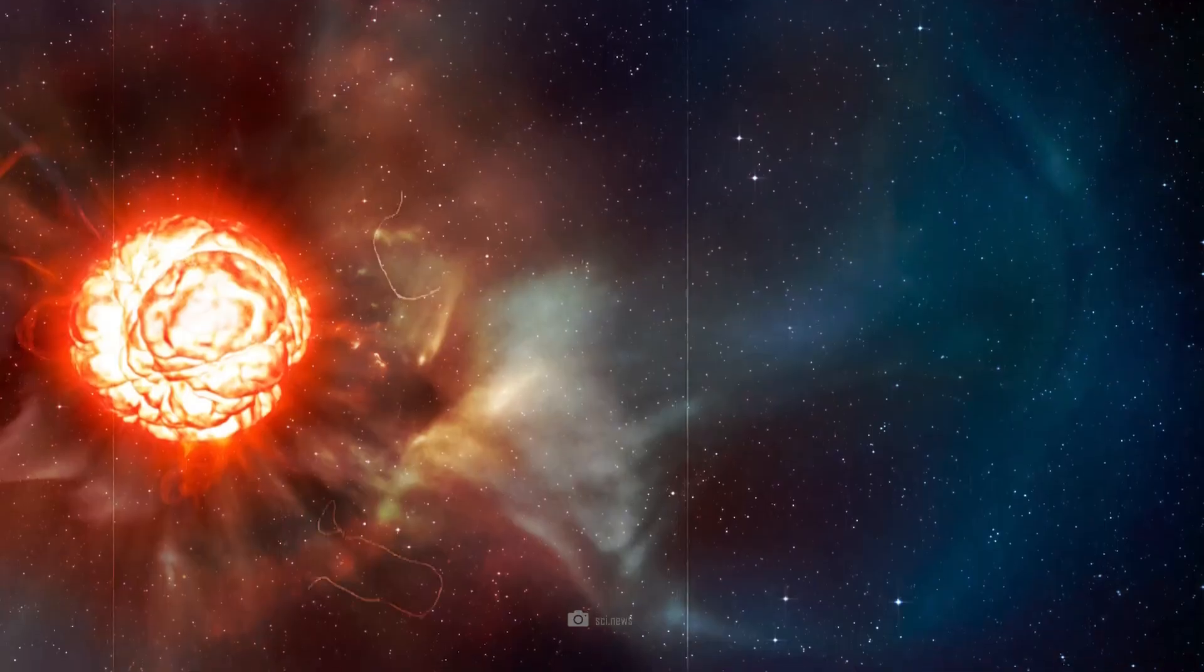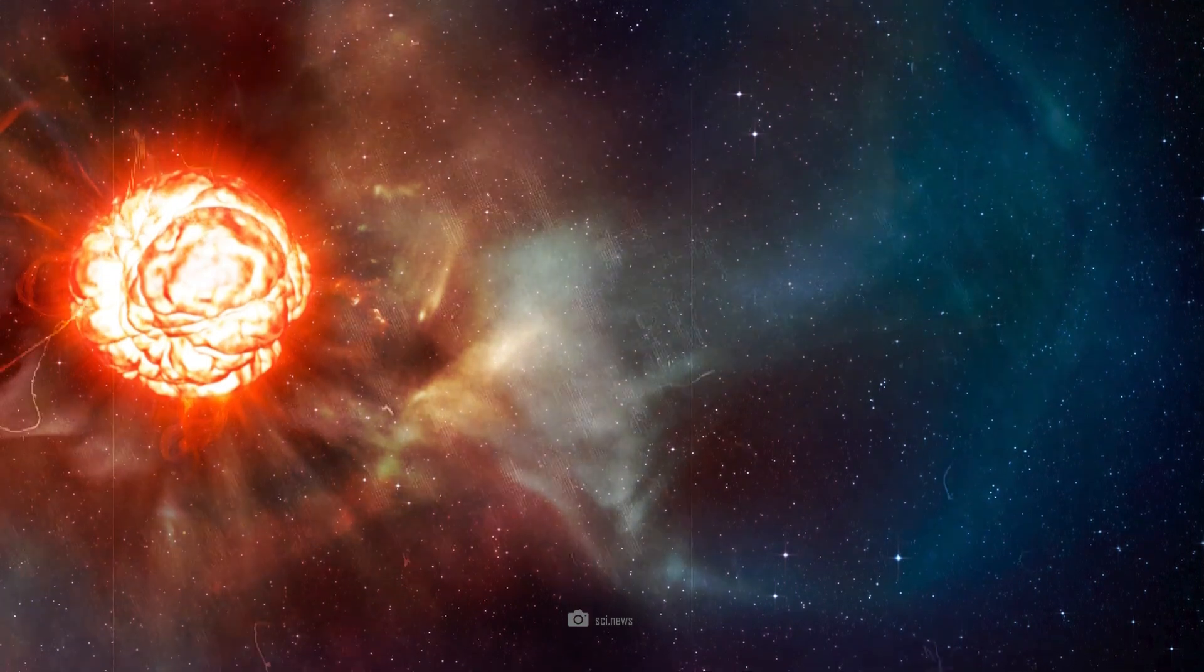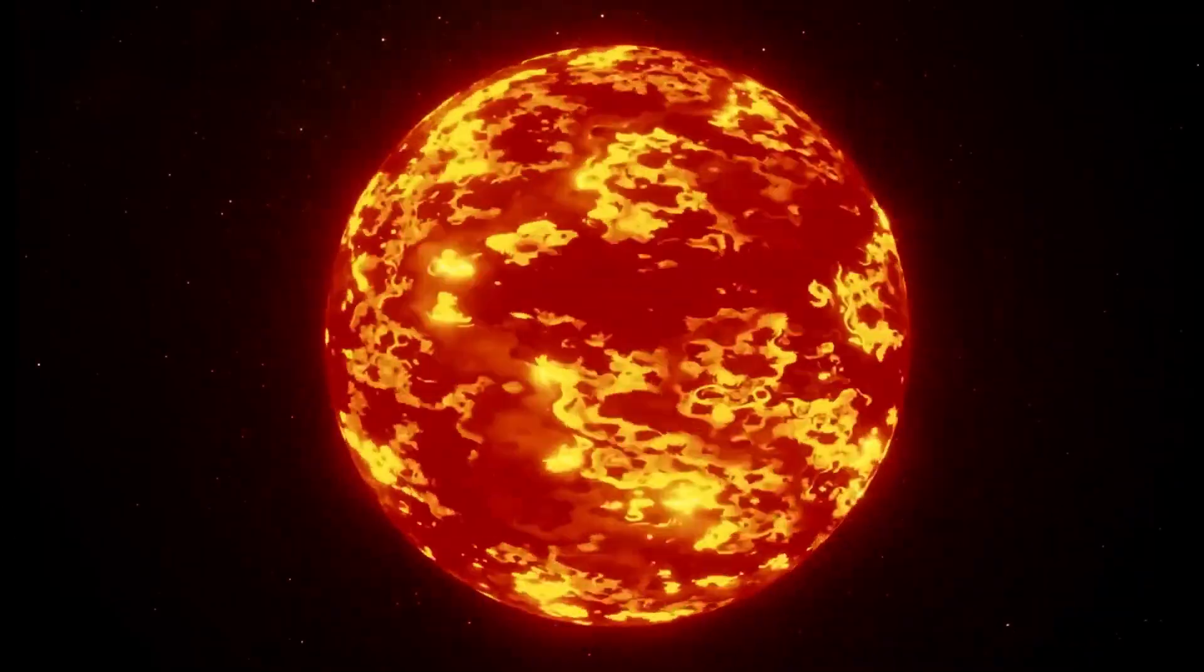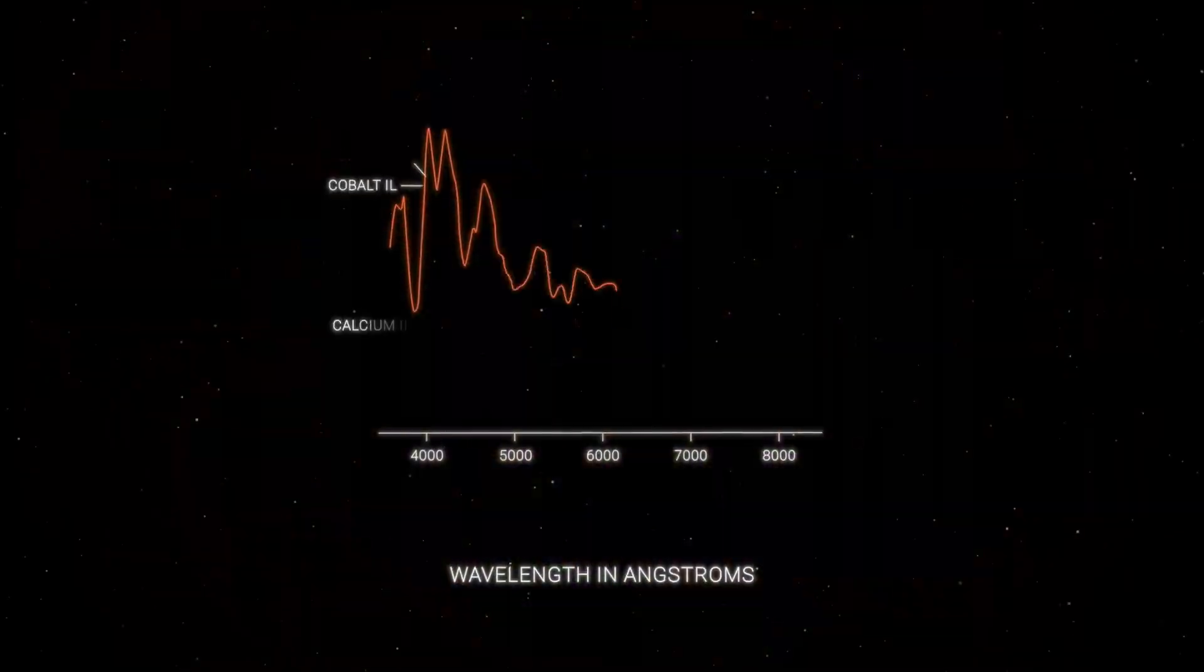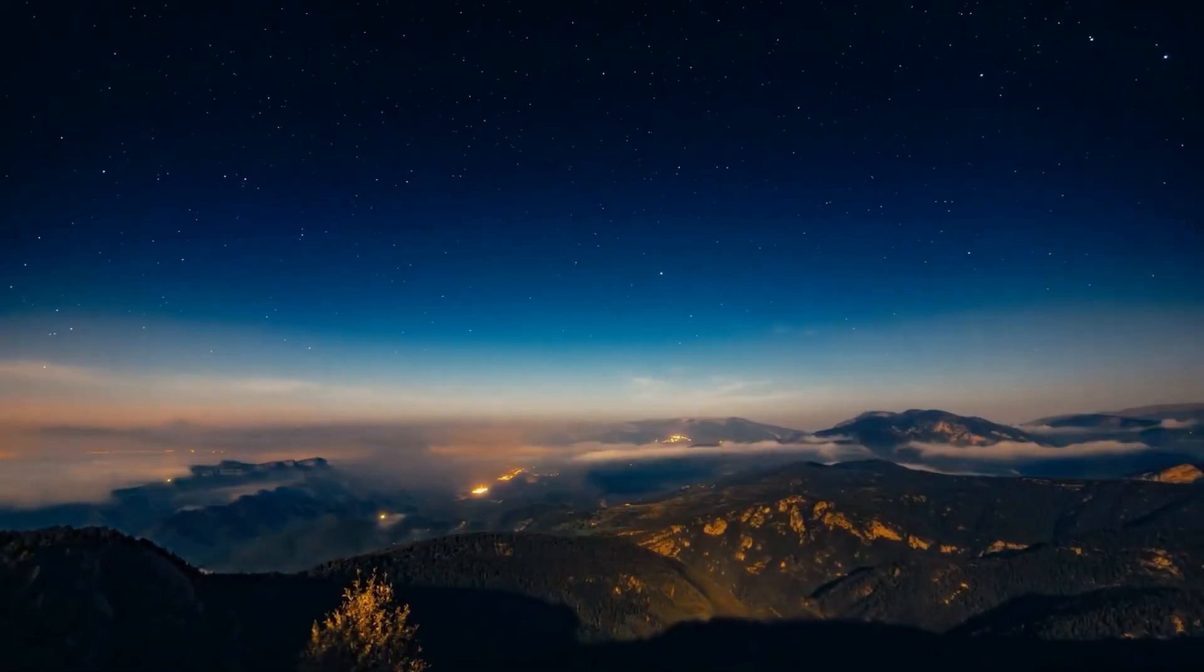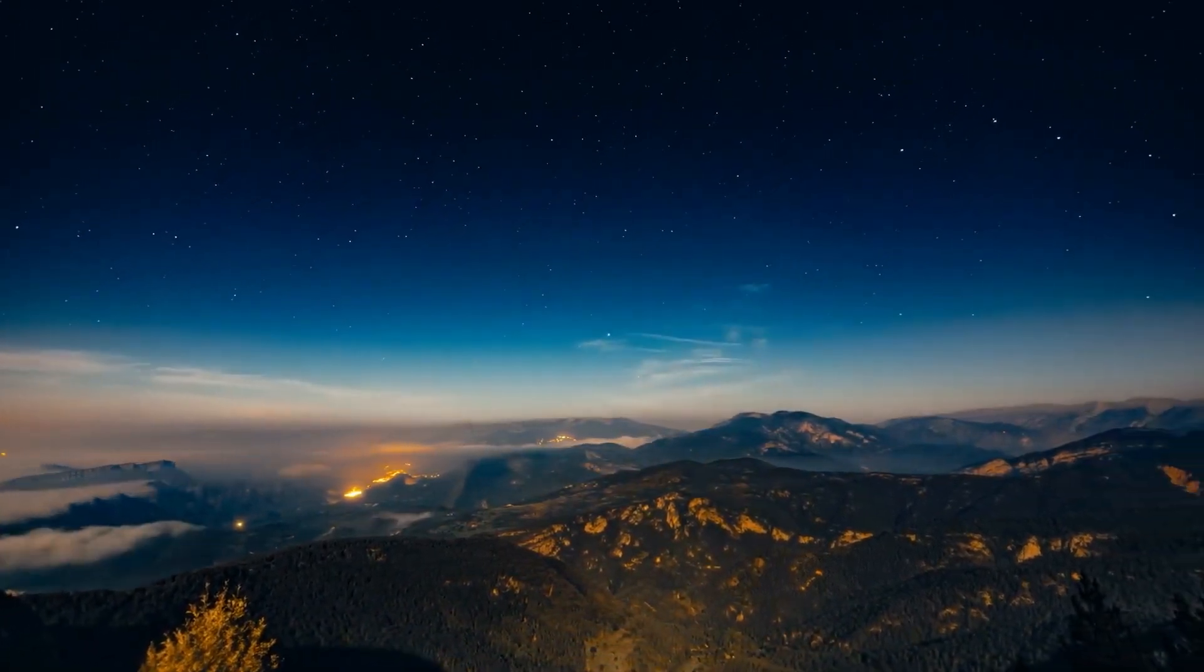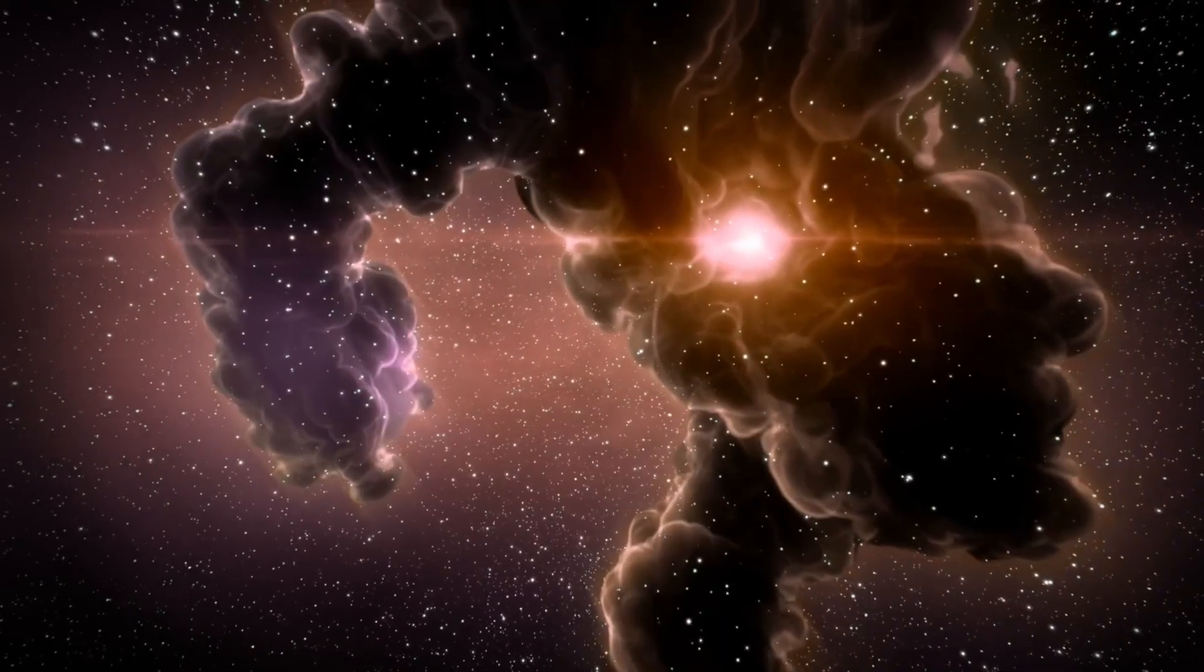In the middle of Betelgeuse's life, the hydrogen supply in the core was already exhausted, and the star began to fuse helium into carbon and oxygen. It was precisely at this stage that Betelgeuse slowly began to blow up into a red supergiant. Its brightness continued to increase, and it began to periodically lose large amounts of matter in the form of strong stellar winds.